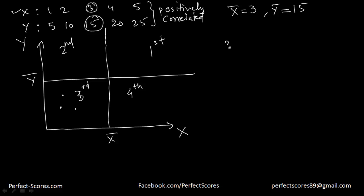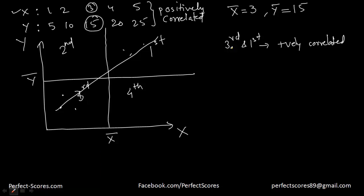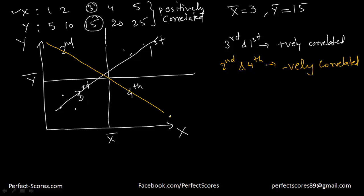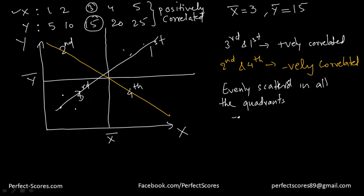If all the points lie in the first and third quadrant, you can draw a straight line with a positive slope, confirming positive correlation. If the points lie in the second and fourth quadrant, they are negatively correlated. If all your points are evenly scattered across all four quadrants, then you can say there is no correlation at all.